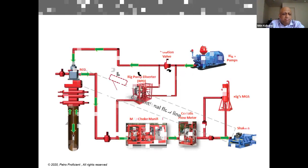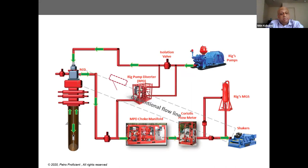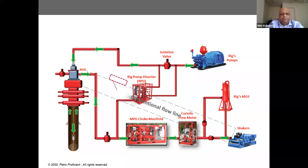Let's quickly look at the MPD equipment. This is a typical MPD setup on the rig. Conventionally you would just have a flow line with a paddle-type sensor going to the shakers. MPD introduces additional equipment: a choke manifold, a Coriolis meter, and an RCD that closes the annulus. There is also a rig pump diverter. When you are applying back pressure, you need at least a minimum value of flow in the system through the manifold — this is maintained using the rig pump diverter.